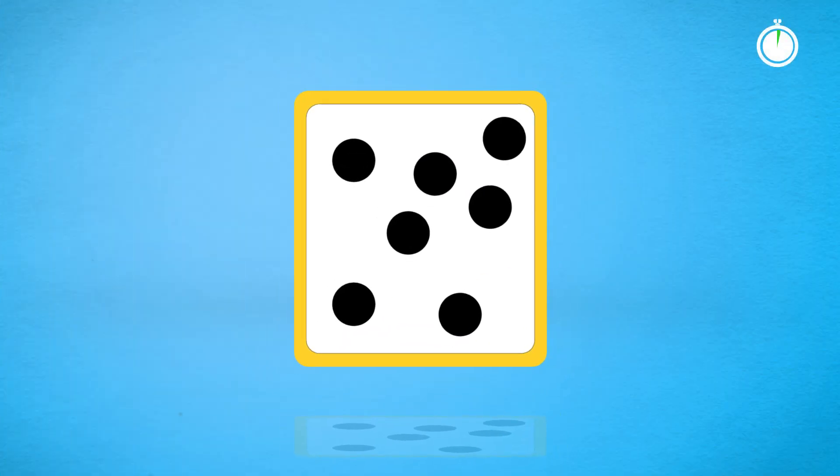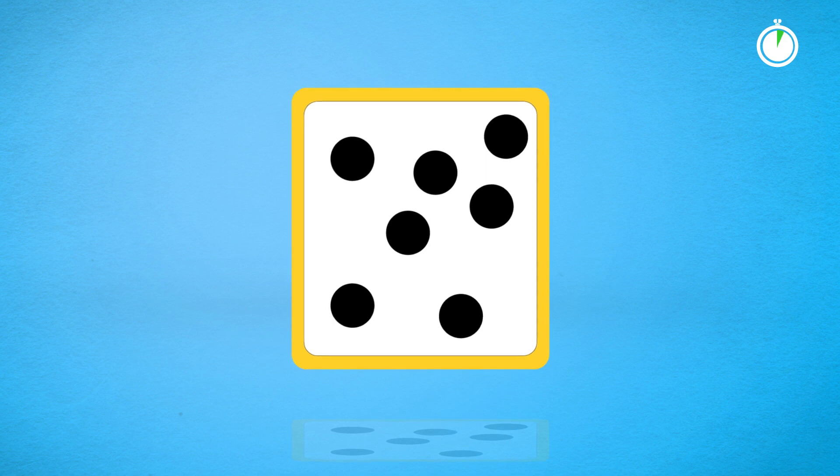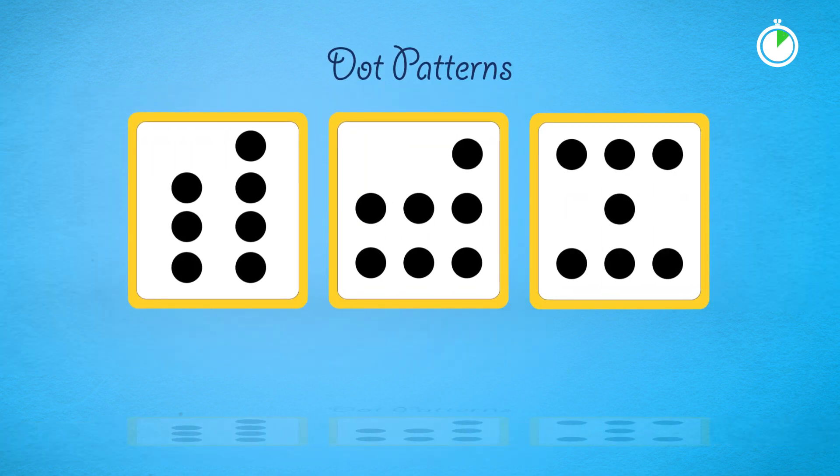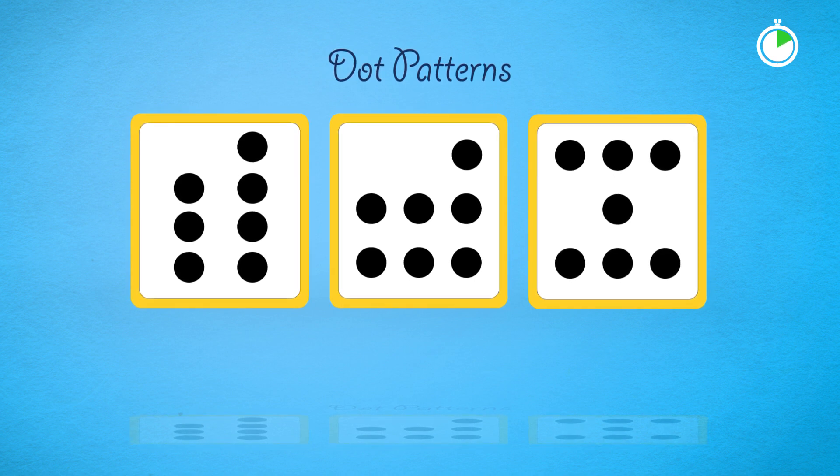How can I help children identify a number in a collection without having to count each one? Dot patterns are helpful, but they require children to memorize many different arrangements.